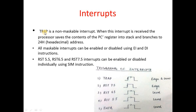Regarding trigger types: TRAP is both edge-triggered and level-triggered (it is the only interrupt that is both). RST 7.5 is edge-triggered, while RST 5.5 and RST 6.5 are level-triggered. TRAP, being non-maskable with the highest priority, is both edge and level sensitive.